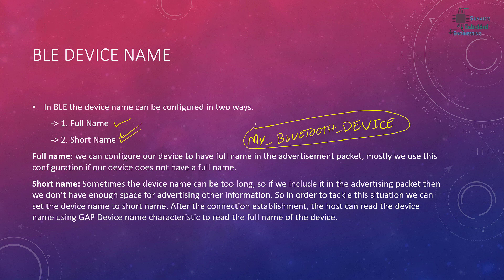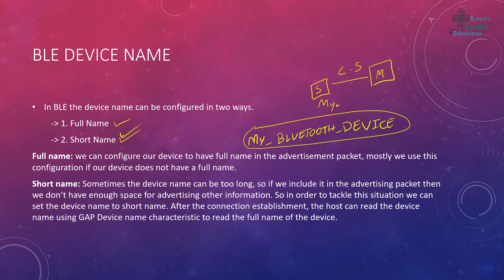After connecting, the device can check the full device name. For example, if you have a slave device and a master device, once the advertisement is done and the devices are connected, the master device can request the device name. After the request, the slave device sends the full name to the master device, so in this way the device can receive the full name.